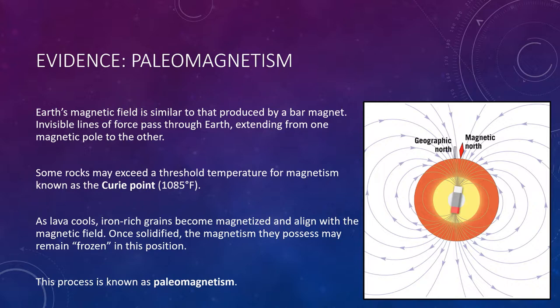Basaltic lavas erupt at the surface at a temperature greater than 1,800 degrees Fahrenheit, exceeding a threshold temperature for magnetism known as the Curie Point at about 1,085 degrees Fahrenheit. The magnetite grains in molten lava are non-magnetic, but as the lava cools, these iron-rich grains become magnetized and align themselves in the direction of the existing magnetic lines of force. Once the minerals solidify, the magnetism they possess remains frozen in this position — they act like a compass needle, pointing toward the position of the magnetic poles at the time of their formation. Rocks that contain such a record of the magnetic poles at the time of their formation are said to possess paleomagnetism, or preserved magnetism.